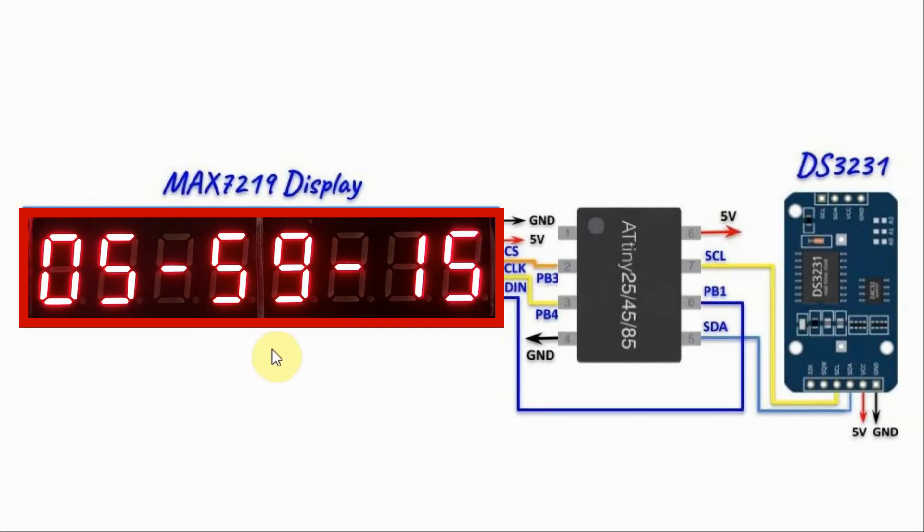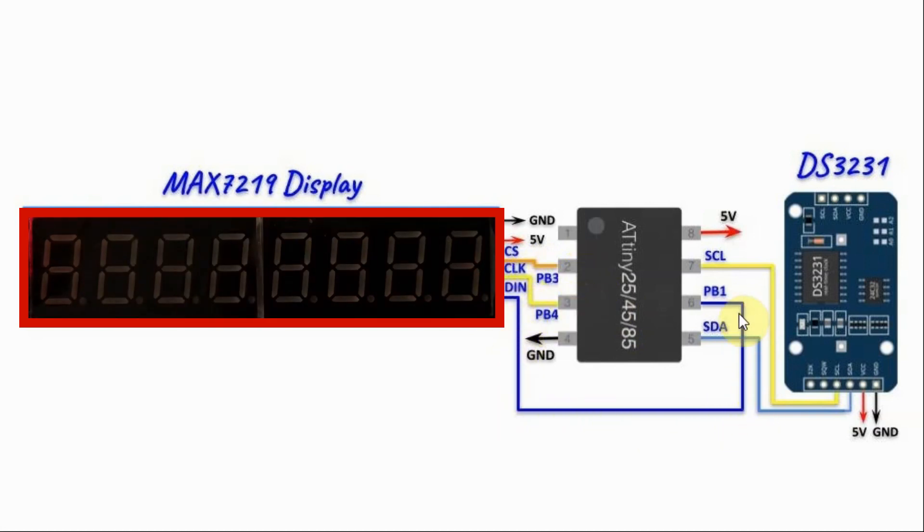In the second project, we have a MAX7219 display serially interfaced with the ATtiny85 using SPI connection. The chip select is connected to pin PB3, clock is connected to PB4, and the data in is connected to PB1.